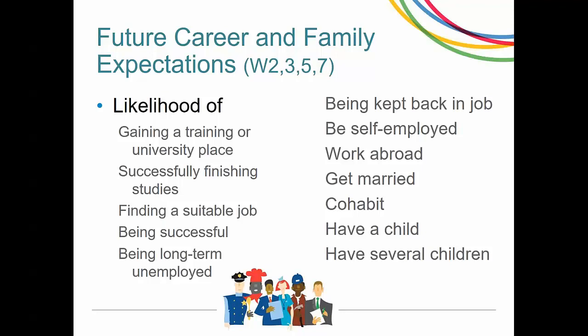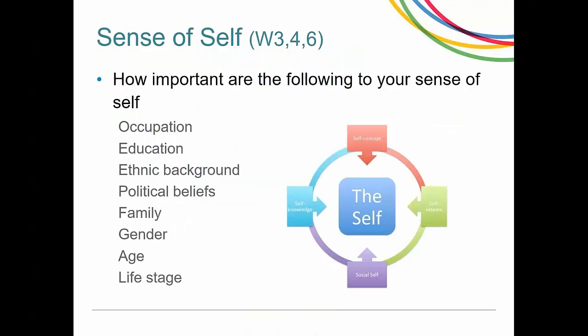Next we have future career and family expectations. We ask their likelihood of various life events: gaining a training or university place, being successful, being long-term unemployed, getting married, or having children. The next question is about their sense of self — how important do they think various things are to who they are: their occupation, ethnic background, family, gender, age, and stage in life. Those are the questions asked only of young adults and not of the youth.